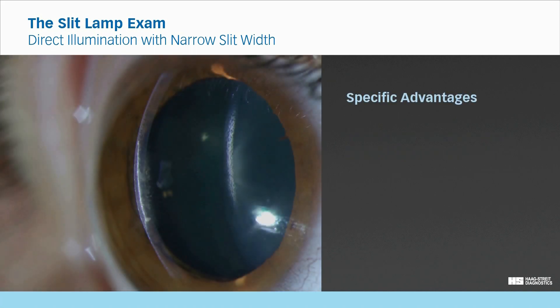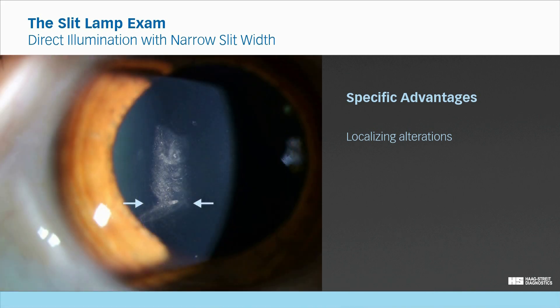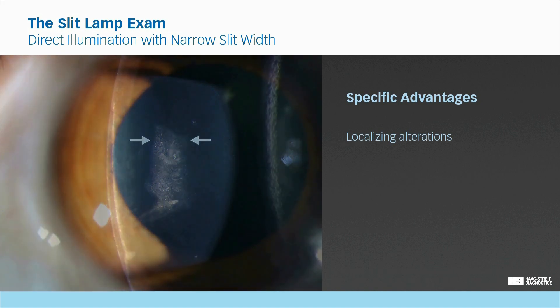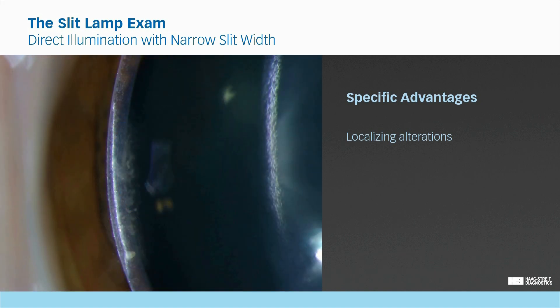The main advantage of the optical section is that it enables the localization of alterations which show increased light scattering in semi-transparent tissues. This opacity would appear in its lateral extent when viewed with a broad illumination. However, its depth appears only when narrowing the beam to a fine slit. In this case, the finding is located approximately in the anterior third of the stroma.